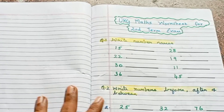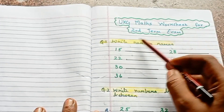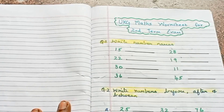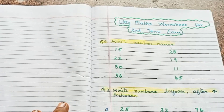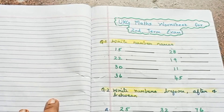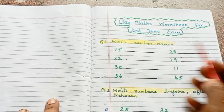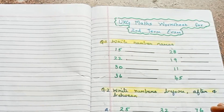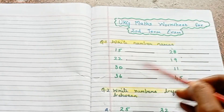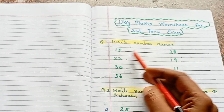Let's start the UKG Math Worksheet for the 2nd Half-Yearly Exam Math Model Question Papers. Let's start the first question: Write Number Names. In this question, there are numbers — so what are the kids to write? Let's start the numbers.